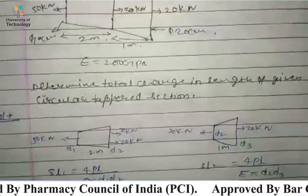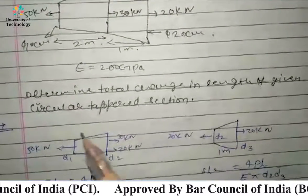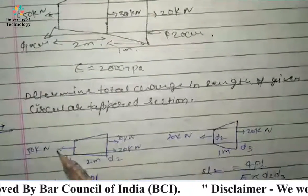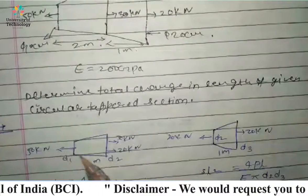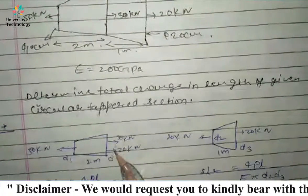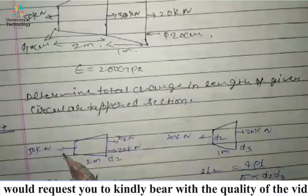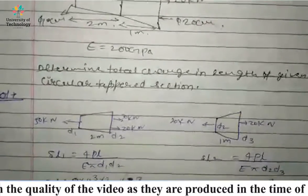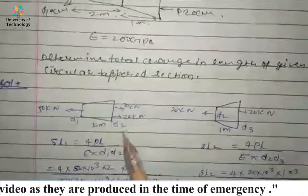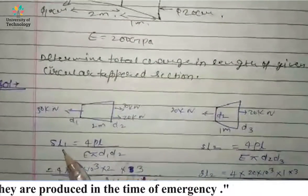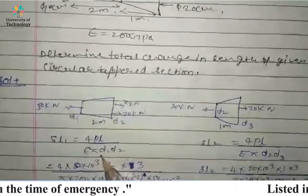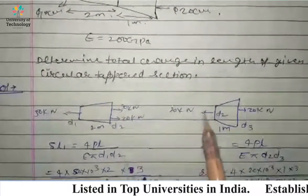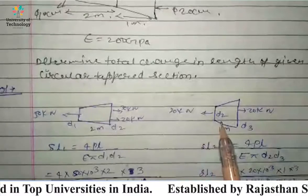We solve the numerical in two parts. The first part has a diameter, a length, and the load applied is 50 kN. Obviously, the 30 kN and 20 kN loads oppose this load. The formula for this section is ΔL1 = 4PL / (π·E·D1·D2).